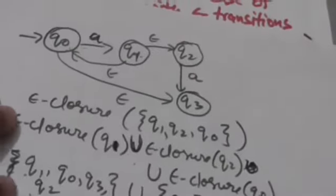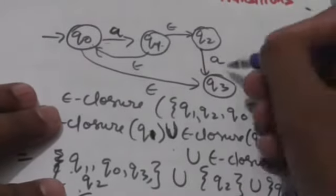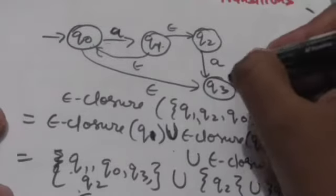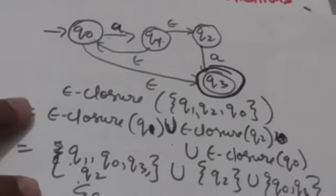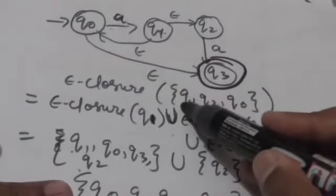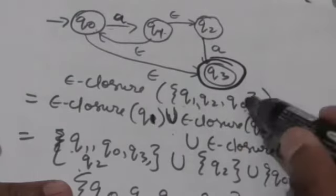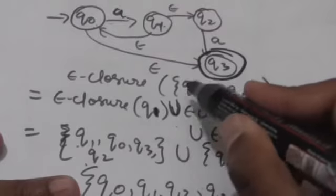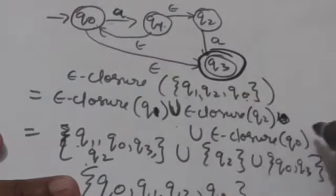It would be more clear after this example. Suppose there is an NFA with empty transitions where q0 is the initial state and q3 is the final state. We have to find out the empty closure of the set {q0, q1, q2}. We will find the empty closure of each state and take the union of all of them.